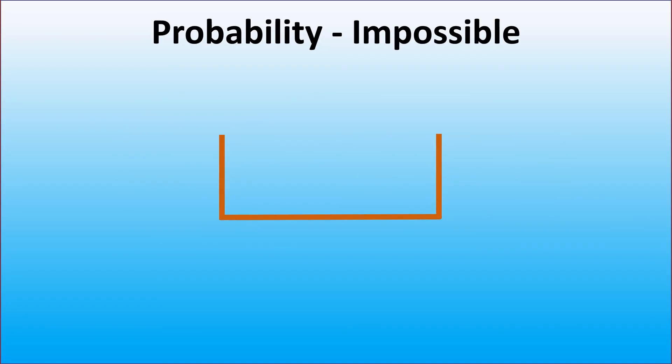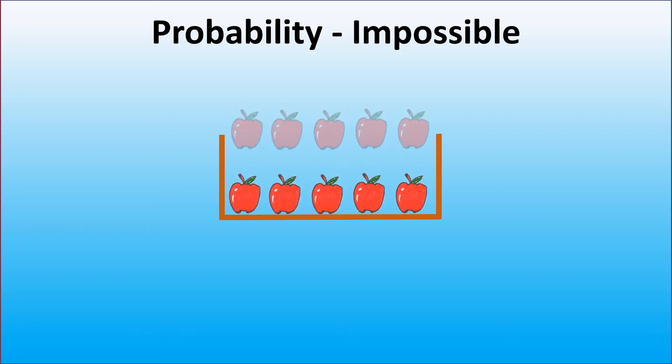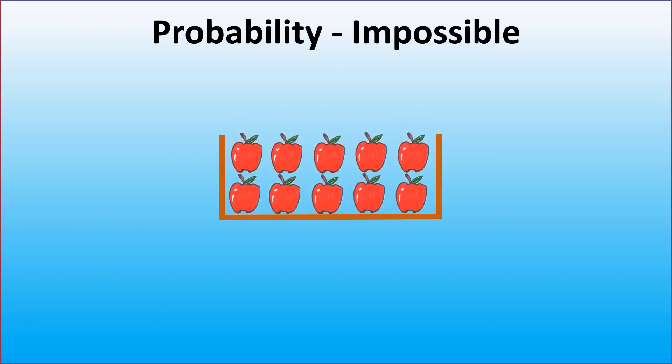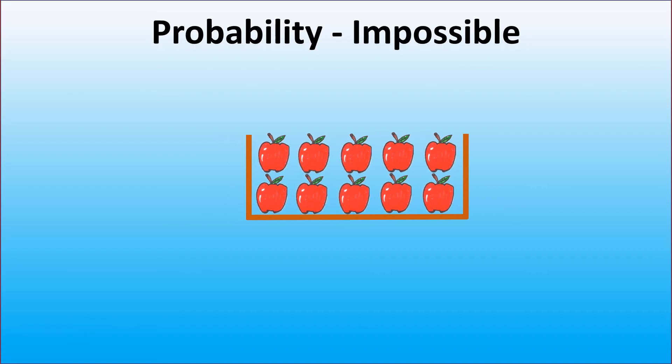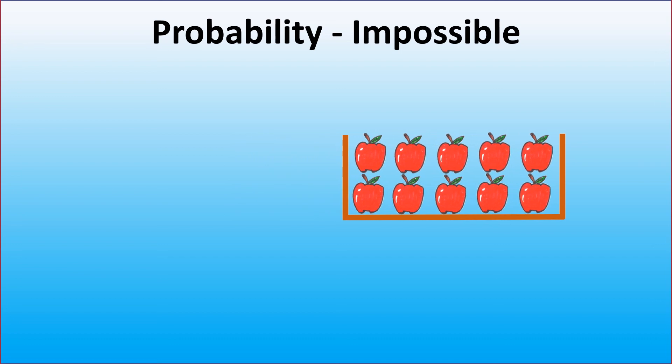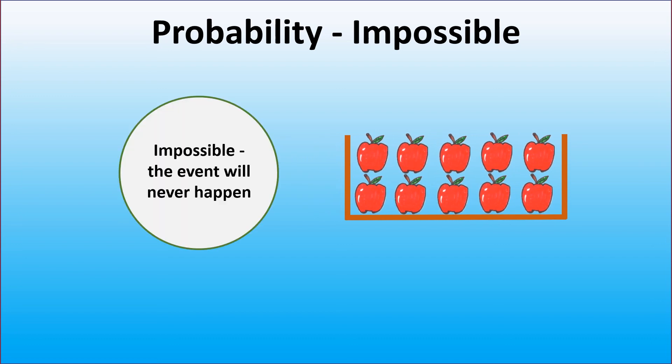What if we have only apples in the box and no oranges? How would we describe the chance of picking an orange from the box? As we have no oranges in the box, this event will never happen. Thus, the chance of picking an orange here is impossible.